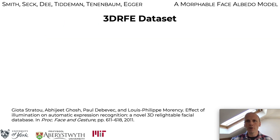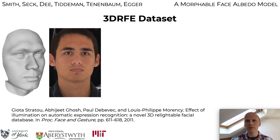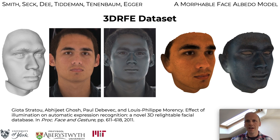We augment our own data set with the 3D RFE data set of Stratu et al. This provides geometry and single view diffuse and specular albedo maps. We again warp the template mesh to the raw geometry and sample the albedo maps onto the mesh.